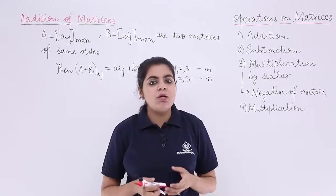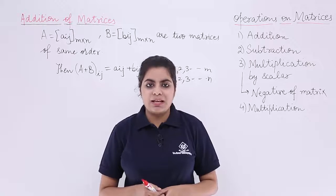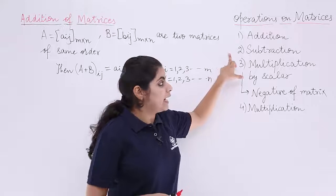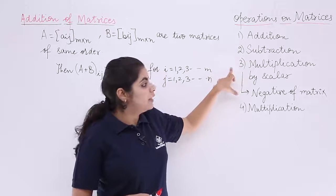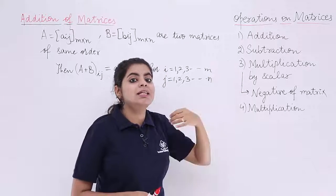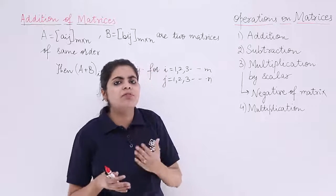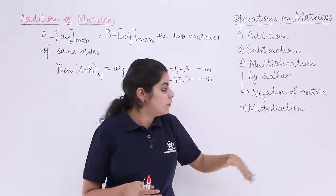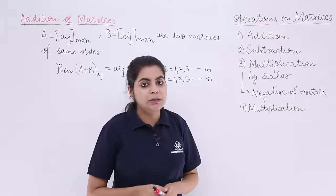The matrices may be operated in the following manner: you can perform addition on matrices, subtraction of matrices, multiplication of matrices by a scalar quantity, and its corollary can be negative of a matrix. We'll be seeing it later on, and the fourth is multiplication.